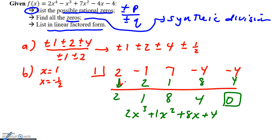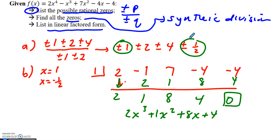After the first synthetic division with root one, you should have gotten the polynomial 2x cubed plus x squared plus 8x plus 4. Note that these two roots found on the graph were originally options from our list, and the reason we're doing synthetic division is because we can't factor this polynomial by grouping — there's no other way we know how to factor it, so we reduce the degree this way.